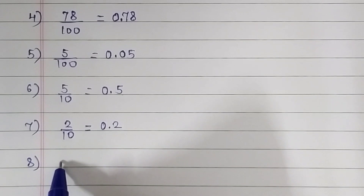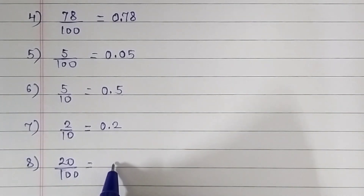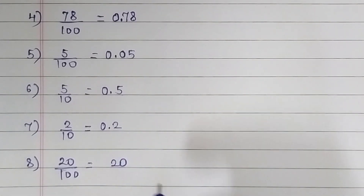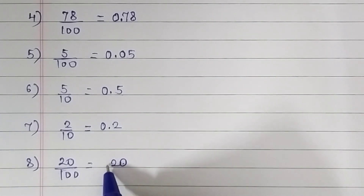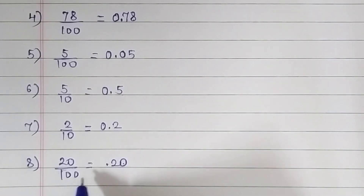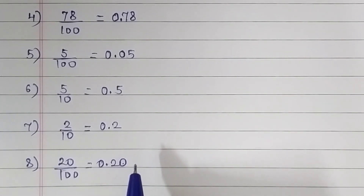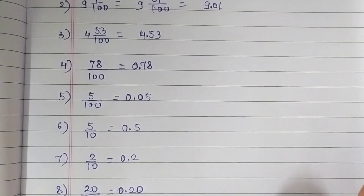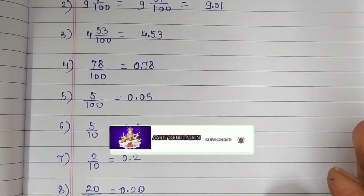Now our last question: 20 upon 100. Write the numerator 20, then count how many zeros the denominator has — it has two zeros. Move two places from our right side — 1, 2 — and put a decimal point. Our fraction is 0.20. This is the solution for problem set 37. Let's practice it very well, and don't forget to subscribe to my channel. See you in the next video. Thanks for watching!